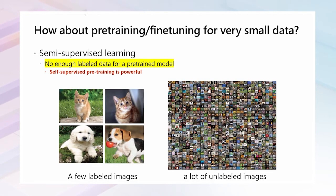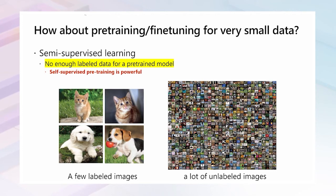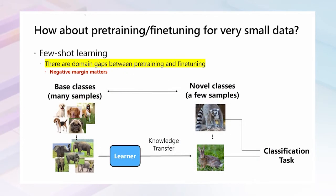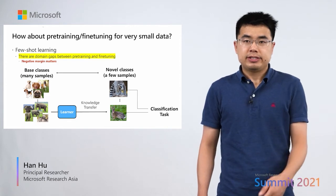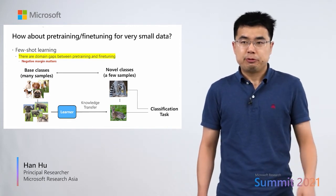Here is a summary of the talk. We adapted the pre-training and fine-tuning paradigm for very small data regimes. We first adapted this paradigm for semi-supervised learning, where our solution is to leverage self-supervised learning. We then adapted this paradigm for few-shot learning, where we find that tight margins matter in pre-training. This is the end of my talk. Thank you for your attention.